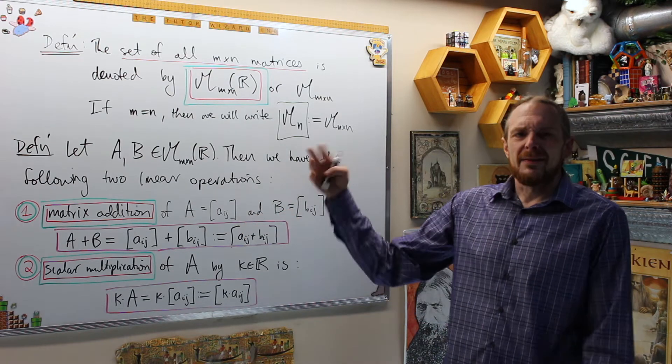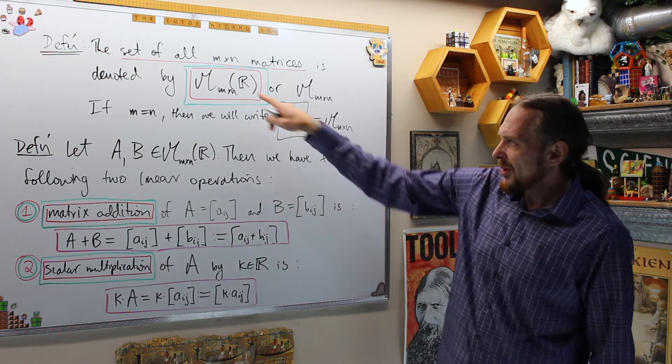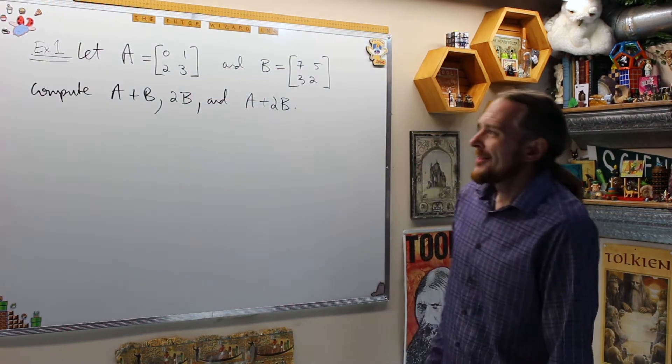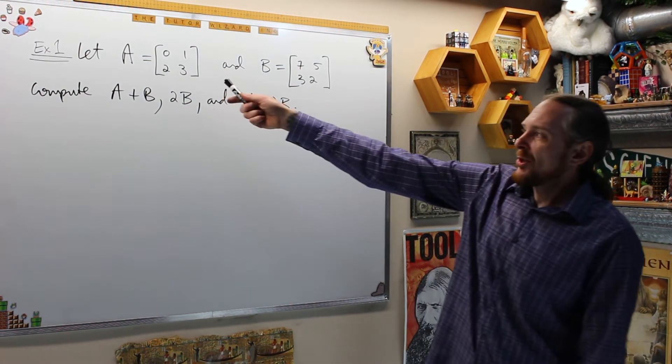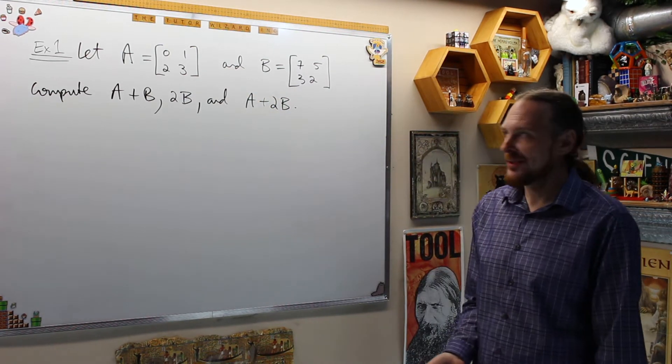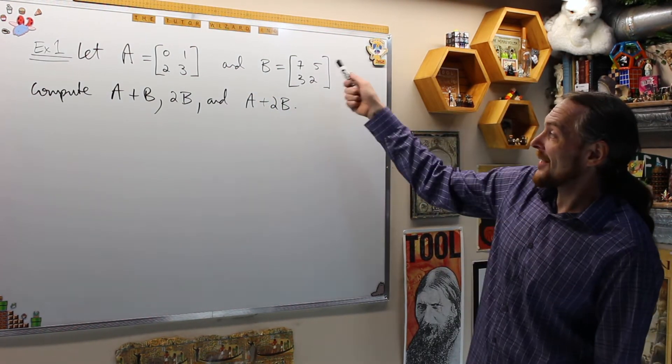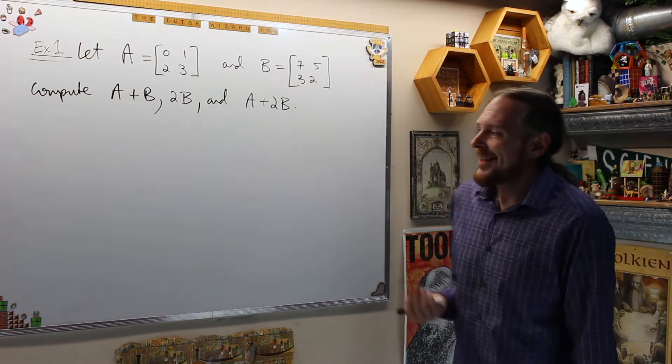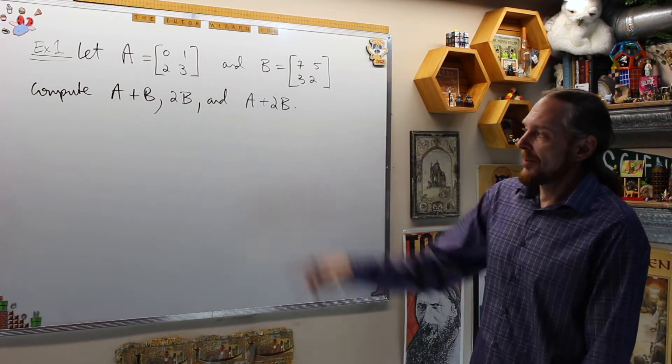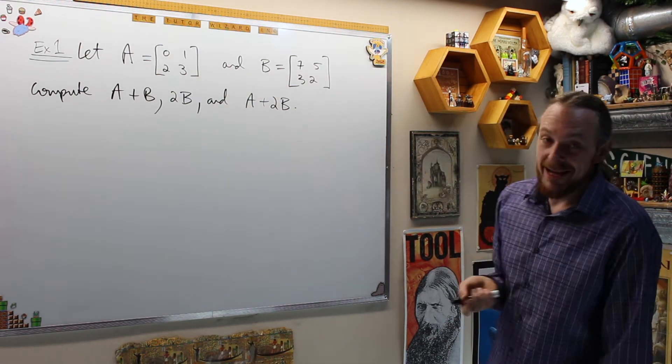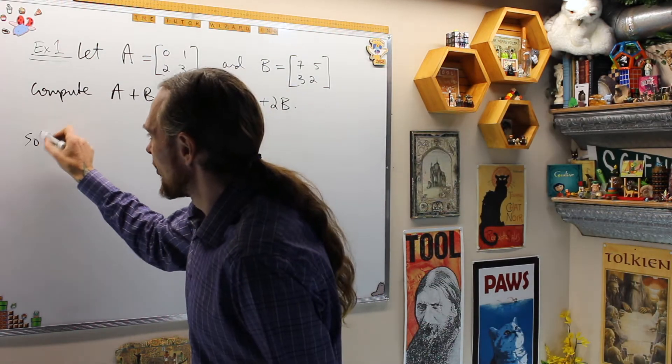Let's do a quick example of this and then give the structure of how we build this thing with these two operations into a vector space. For example one, let A be the two by two matrix [0,1; 2,3]. Those are actually Fibonacci numbers. And let B = [7,5; 3,2]. Those are the first four prime numbers in some order. Let's compute A+B, let's compute 2B, and then we'll compute A+2B.